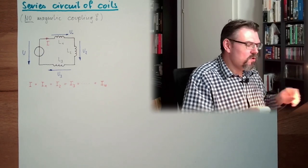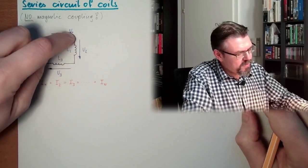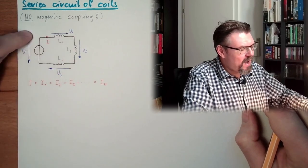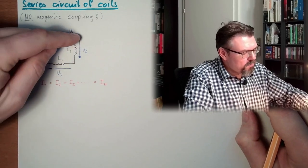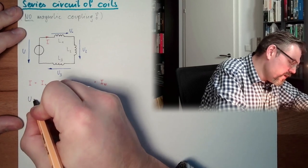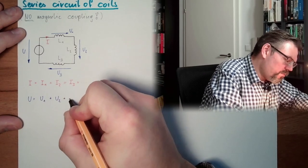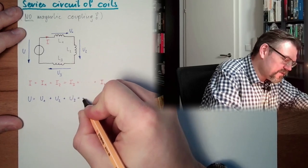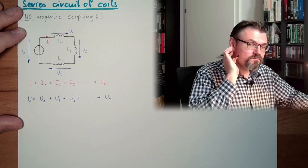And also, without further explanation, if I do a loop here, I notice that U equals U1 plus U2 plus U3. So we have U equals U1 plus U2 plus U3 plus, and if there would be more, we have U4, alright?